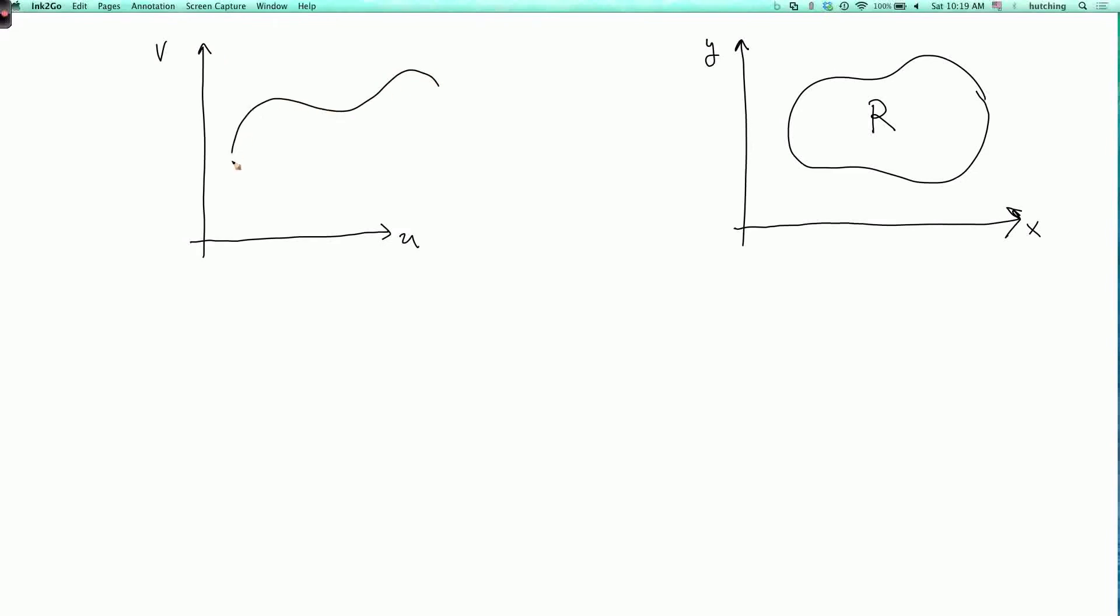So we'll have some region S in the u-v plane, and we'll have a transformation which we'll call T, mapping the region S to the region R.